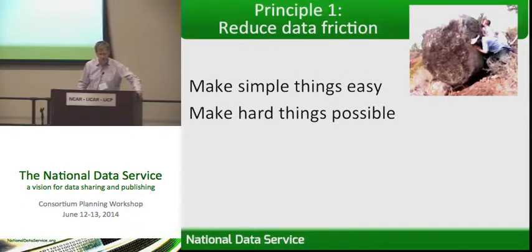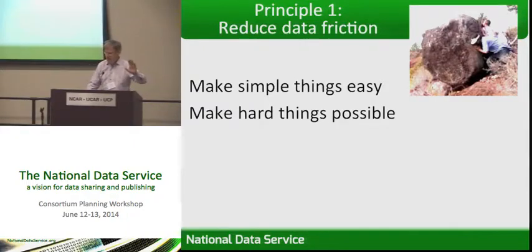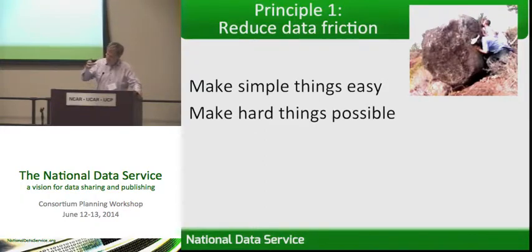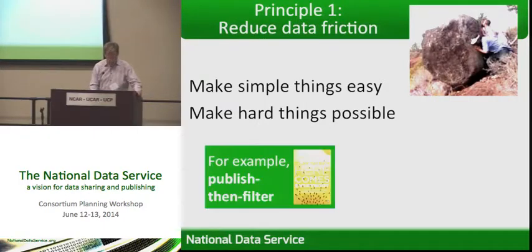The first principle that I believe very strongly in is reducing data friction. We've heard already many perspectives on data and certainly the importance of curation and business models — these are all vital issues to address. But I also believe that there's a lot of data out there that, like this boulder, people actually want to make available, but it's just too much trouble, too much hassle to go the extra step and put it somewhere where it can be accessed. So I think there's a lot to be said for adopting technologies in a national data service that will make publication of data the default rather than the exception.